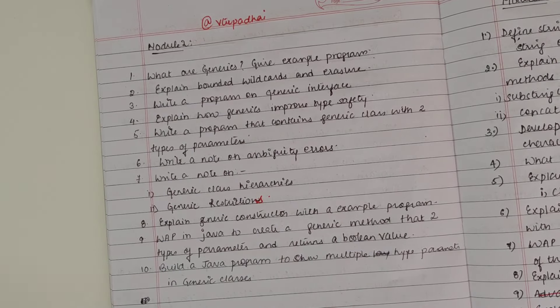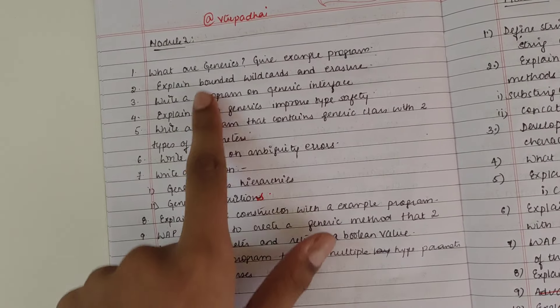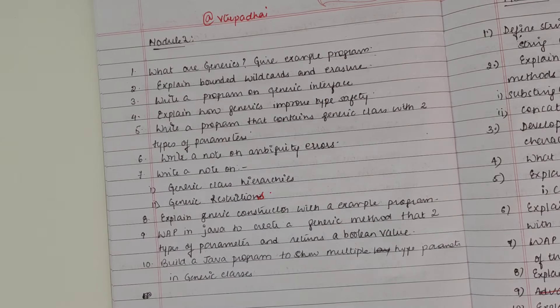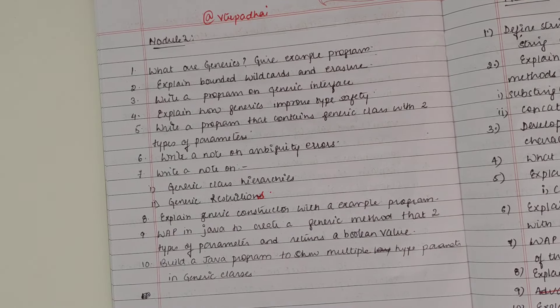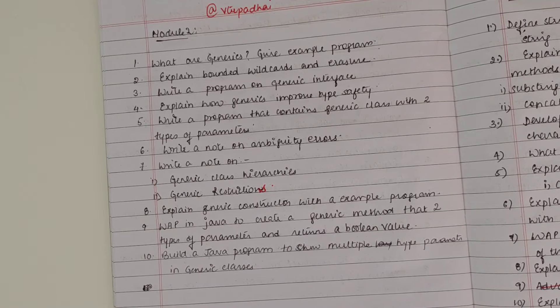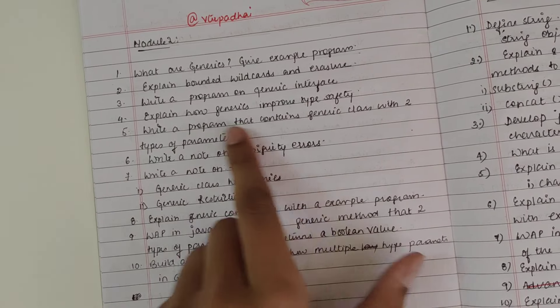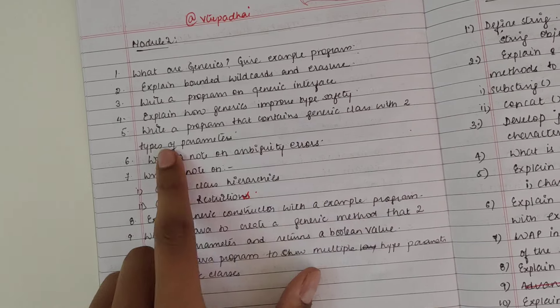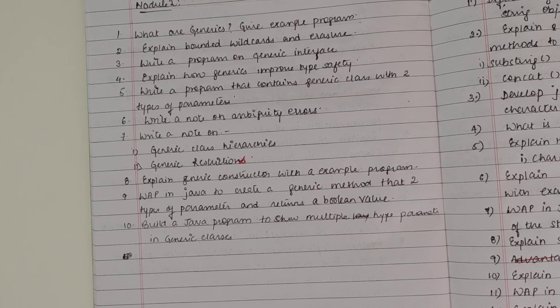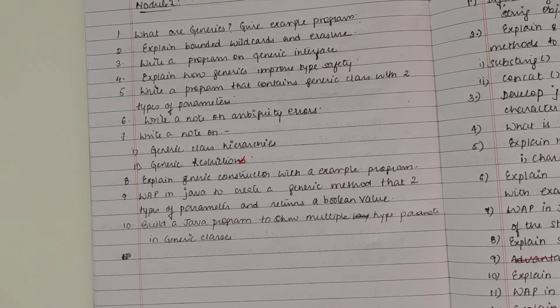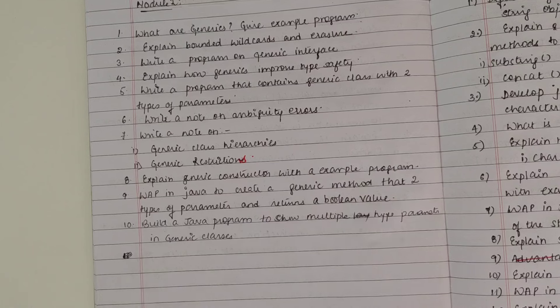Next we have Generics, a new topic included in the syllabus. What are Generics? Explain with example program. Bounded wildcards and erasure. Write a program for generic interface. How to improve type safety. Write a program that contains generic class with two types of parameters. Explain ambiguity error. Note on Java class hierarchies and generic restriction. Explain generic constructor with sample program.